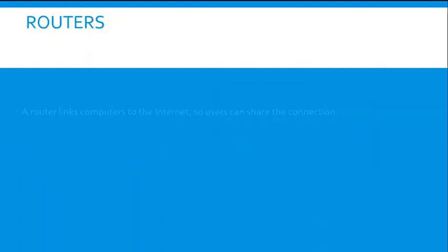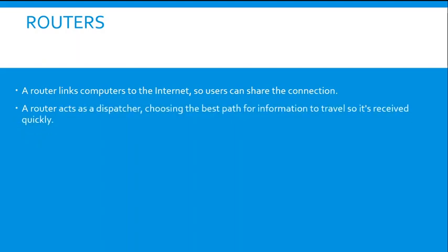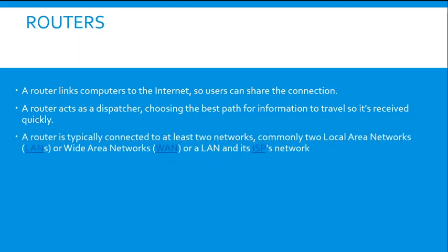A router connects computers to the internet so hosts can share the connection. It acts as a dispatcher, choosing the best path for information to travel so it is received quickly. It is connected to two networks — commonly a LAN (Local Area Network) and a WAN (Wide Area Network) — and the ISP network provided by the internet service provider.